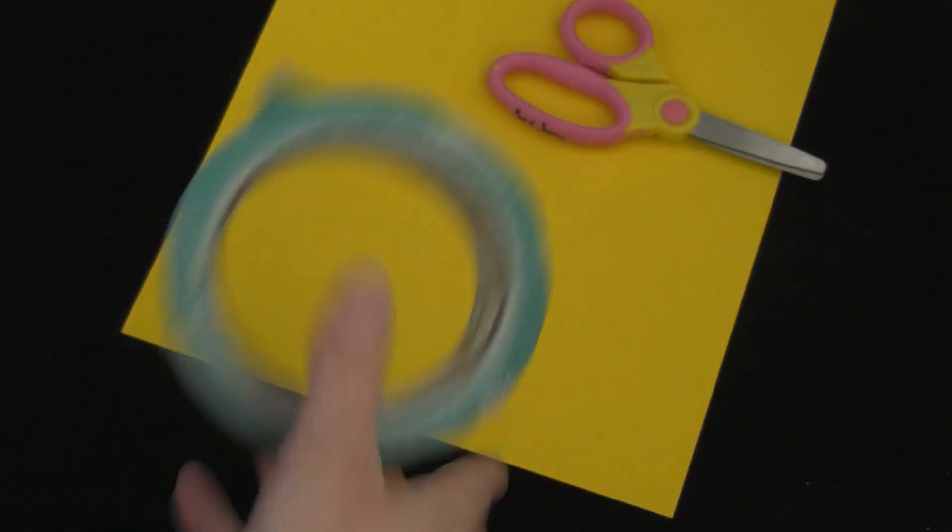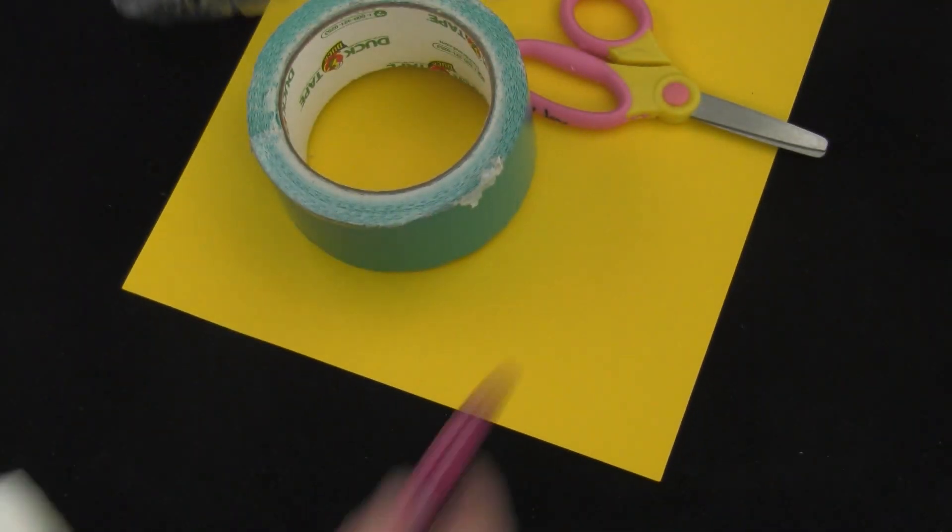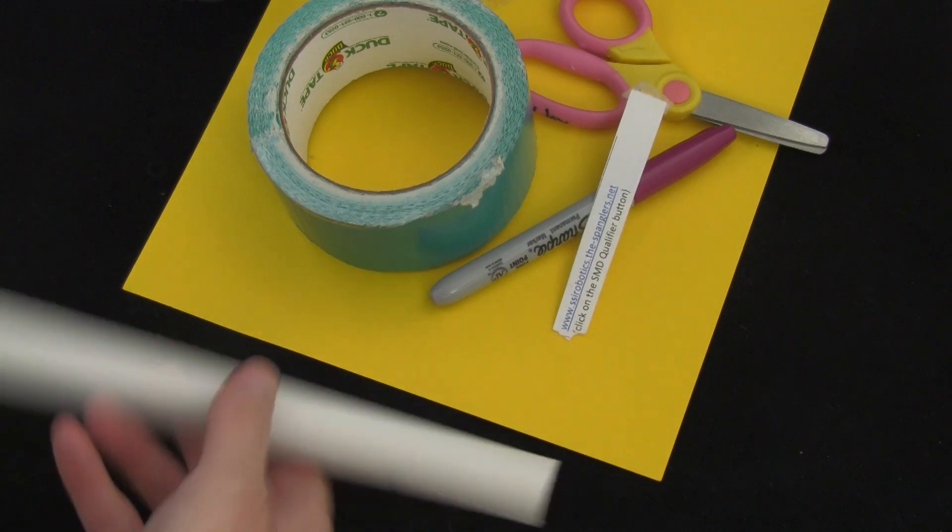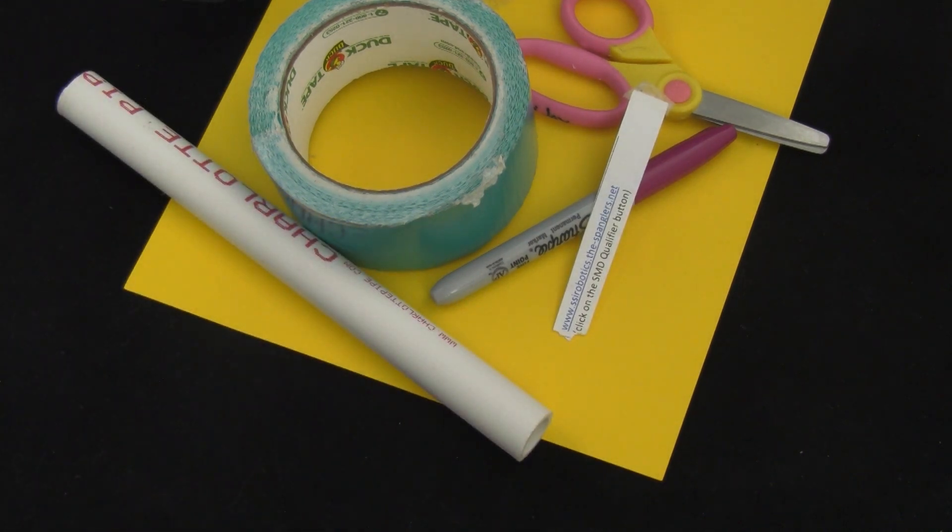You need paper, scissors, tape, a writing utensil, a water bottle, and a pull tab from a bulletin board. A piece of half-inch PVC pipe is helpful, but not required.